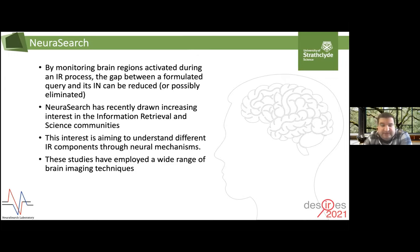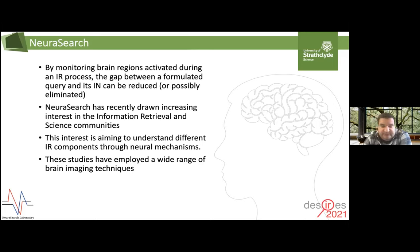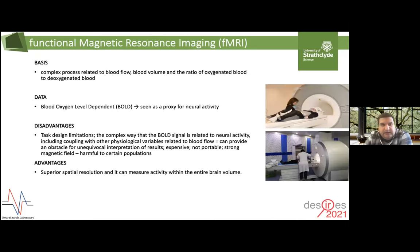Scientists have been trying to understand different components in IR — for example, relevance, information need, and satisfaction — and they have employed a wide range of brain imaging techniques. In this talk, I'm focused on fMRI and EEG because they are the two most popular neuroimaging techniques, and I'm going to present some of the works I've done using these techniques. If you're interested to read more, I refer you to the paper to see other works happening in this area.